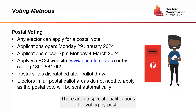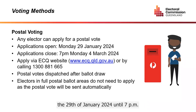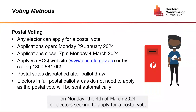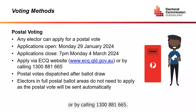Postal voting: there are no special qualifications for voting by post — all electors are entitled to apply for a postal vote. Applications for a postal vote will be available from the notice of the election on Monday 29 January 2024 until 7pm on Monday 4 March 2024. Electors seeking to apply for a postal vote can do so through the Electoral Commission of Queensland's website at www.ecq.qld.gov.au or by calling 1300 881 665.